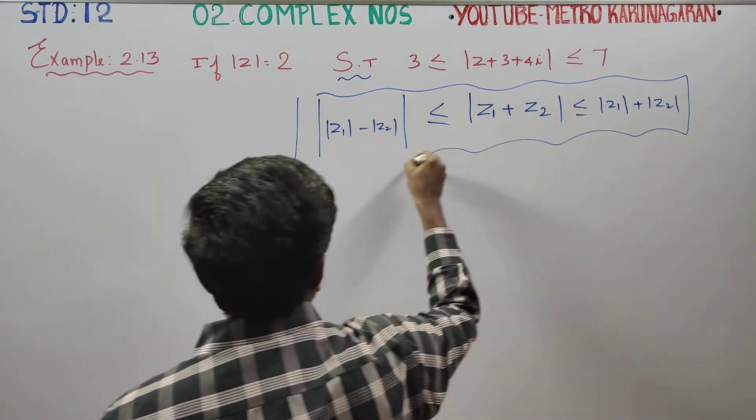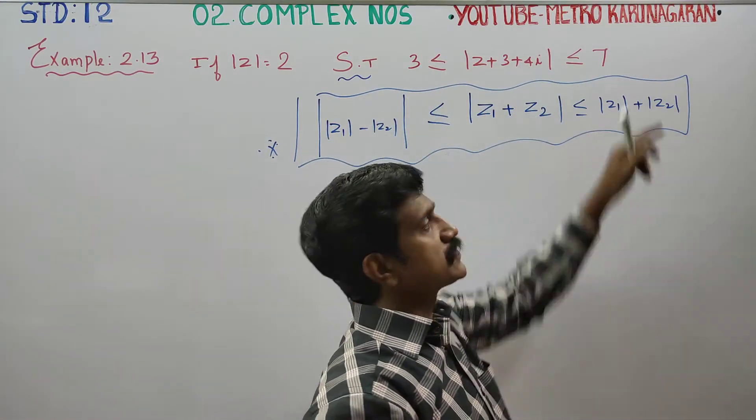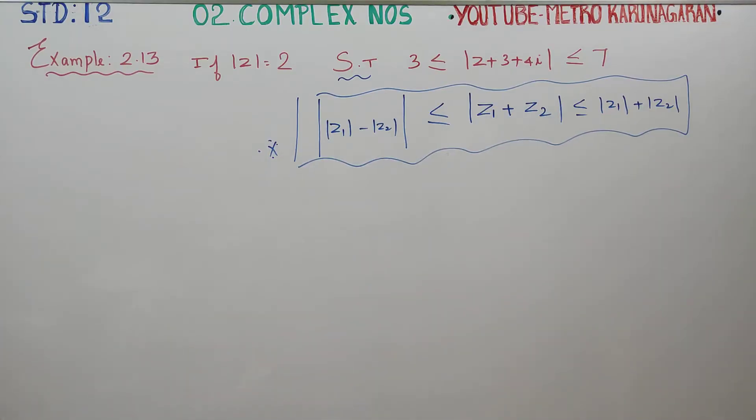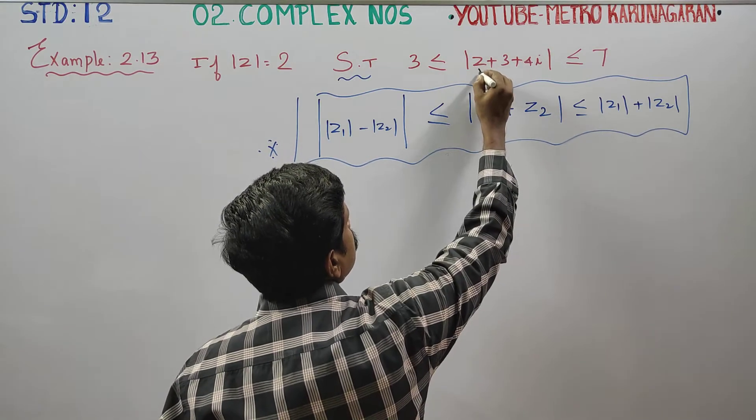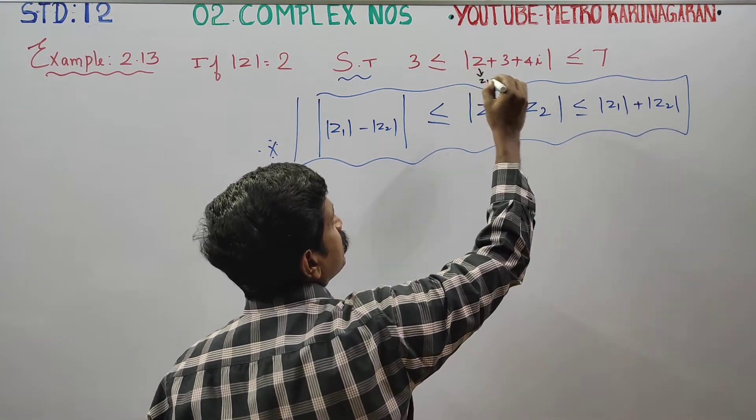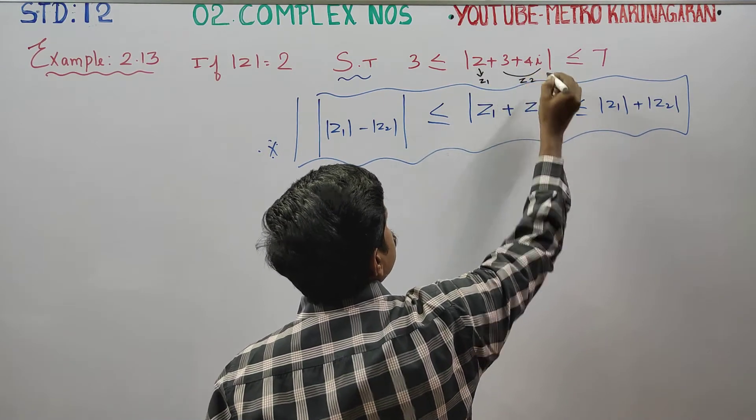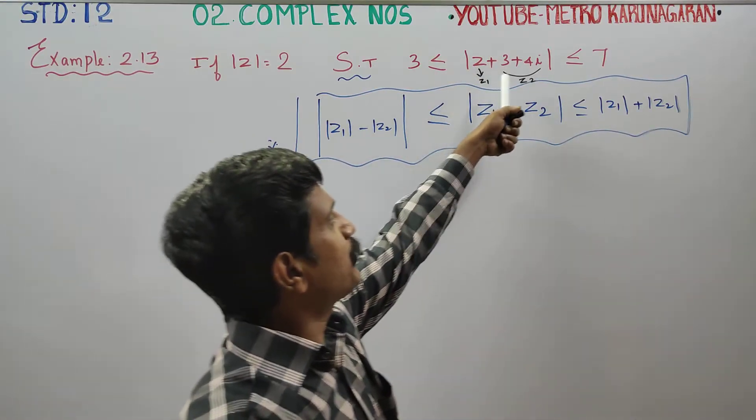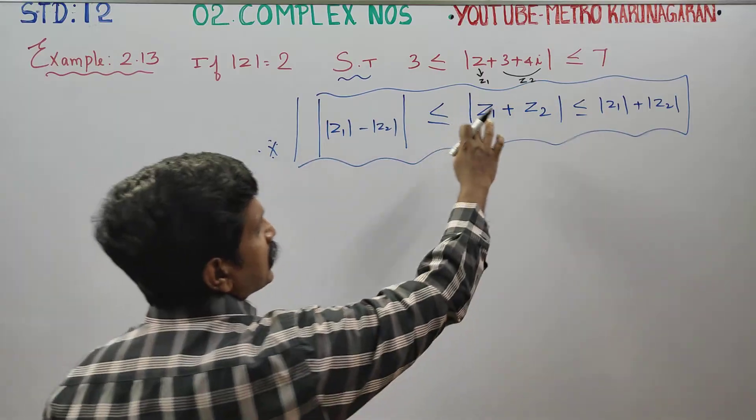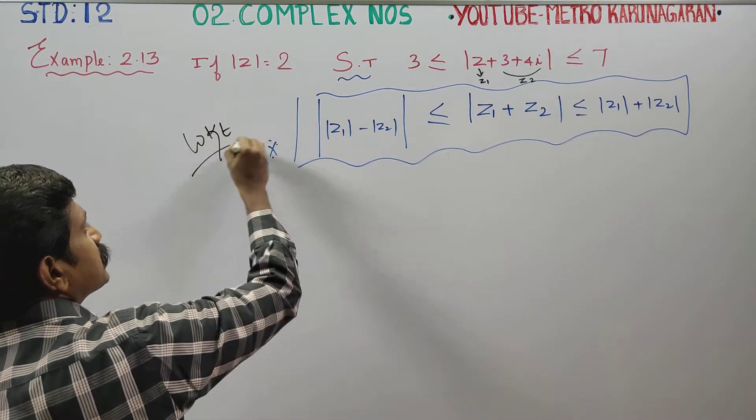When you're given two numbers and asked to prove an inequality like this, using this formula is very convenient. Let me show you how to apply it. If z1 is here and we change the formula for this problem, what happens?